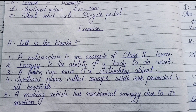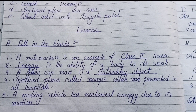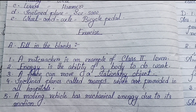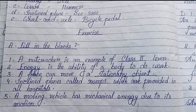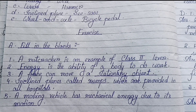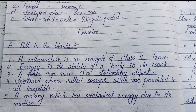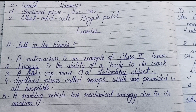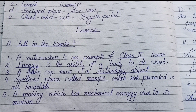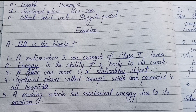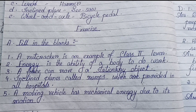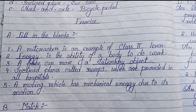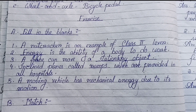Now the exercise part — Fill in the blanks. Number one: A nutcracker is an example of class two lever. Number two: Energy is the ability of a body to do work. Number three: A force can move a stationary object. Number four: Inclined planes called ramps are provided in all hospitals. Number five: A moving vehicle has mechanical energy due to its motion.